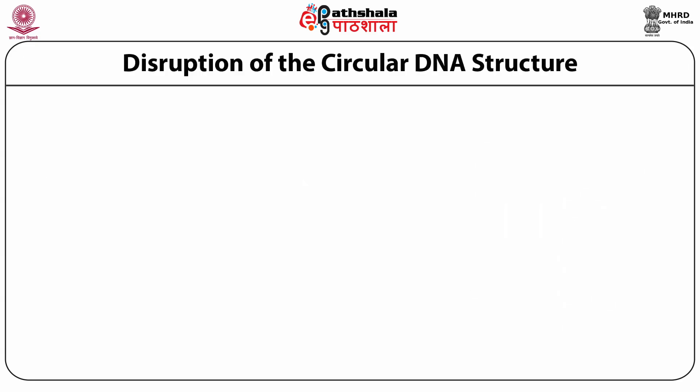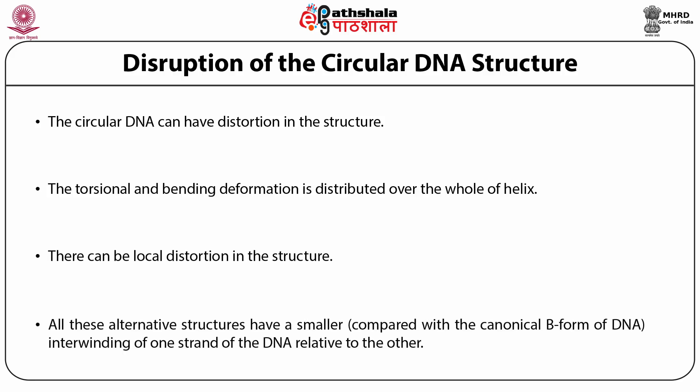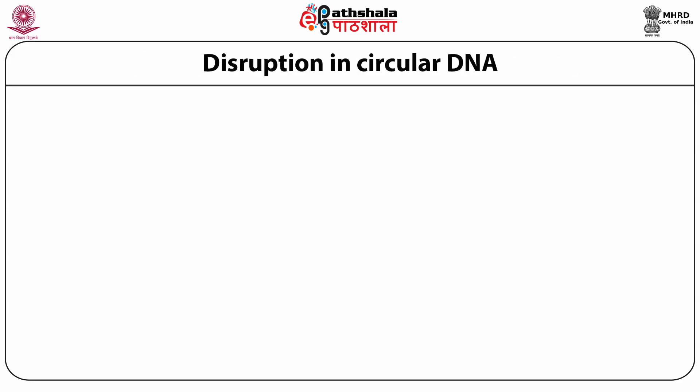Disruption of circular DNA structure: circular DNA can have distortions in the structure. The torsional and bending deformation is distributed over the whole helix. There can be local distortion in the structure. All these alternative structures have a smaller interwinding of one strand of DNA relative to the other, compared with the canonical B form of DNA.